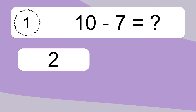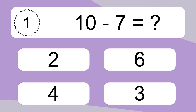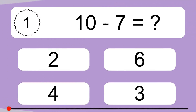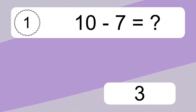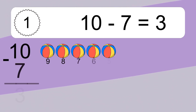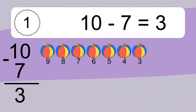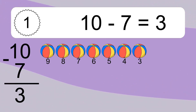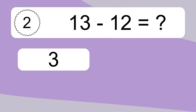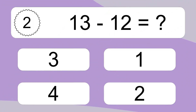10 minus 7 equals what? 10 minus 7 equals 3. Let's count it: 9, 8, 7, 6, 5, 4, 3.